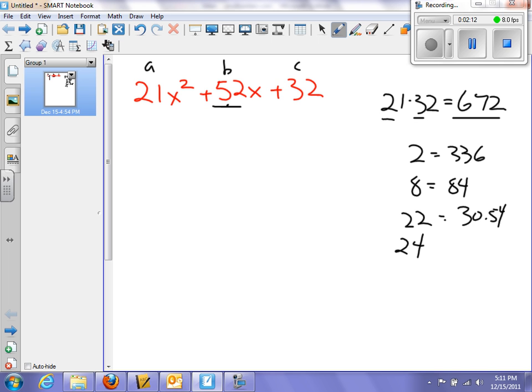672 divided by 24. Ah, bingo, 28. 24 plus 28 is 52. So I have found my two factors that I need. That's really good. It's a lot faster than just drawing parentheses and trying to guess what all these numbers would be.